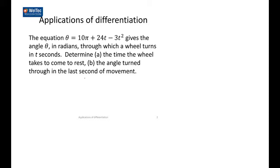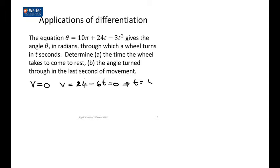Let's start off: find the time the wheel takes to come to rest. The wheel is at rest when V is equal to zero, so we need to find V. V is the derivative. 10π is a constant, so the derivative of a constant is zero. The derivative of 24t will be 24, minus 6t, and we set that equal to zero. Rearranging gives time equal to 4 seconds — so it takes 4 seconds to come to stop.